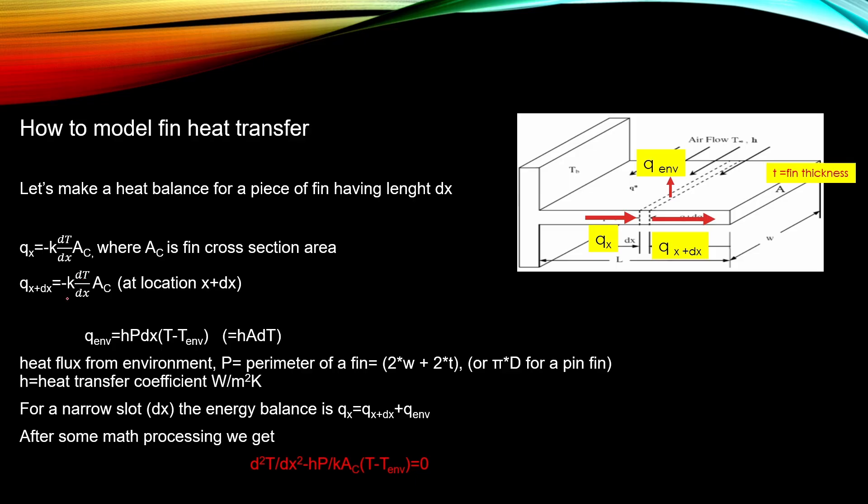And the heat conduction out from that slot is heat conductivity times the temperature difference times the cross-sectional area. But now we must take this temperature derivative at location x plus dx.